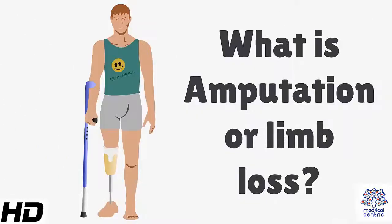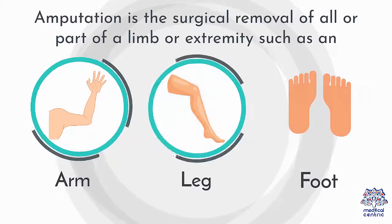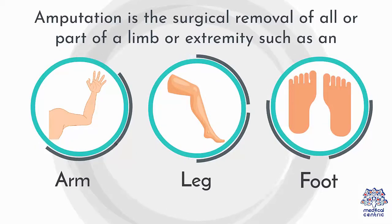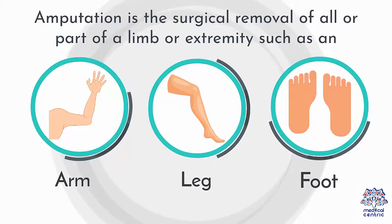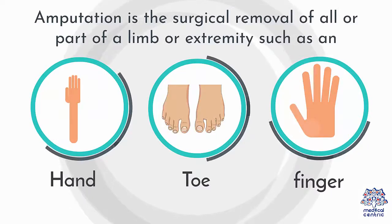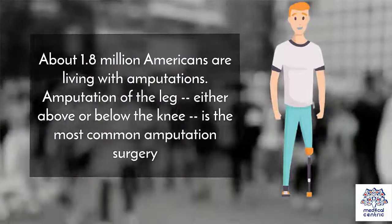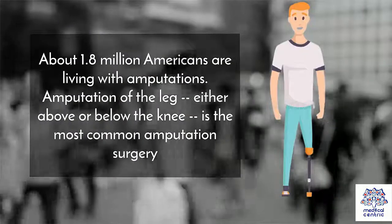Today's topic is: what is amputation or limb loss? Amputation is the surgical removal of all or part of a limb or extremity, such as an arm, leg, foot, hand, toe, or finger. About 1.8 million Americans are living with amputations.